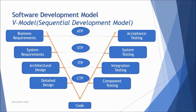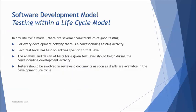From this model we understand the four good characteristics of testing. First, for each development activity there must be a corresponding testing activity. Second, each test level has a test objective specific to that level — it must be uniquely identified in terms of objective and coverage. Third, the analysis and design of tests for a given test level must begin during the corresponding development activity, not waiting until the testing phase. Fourth, testers should be involved in reviewing documents as soon as drafts are available — as early as the first piece of document is created, so that requirements can be improved.